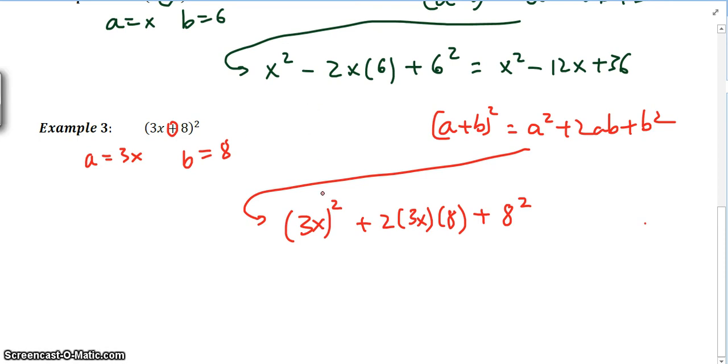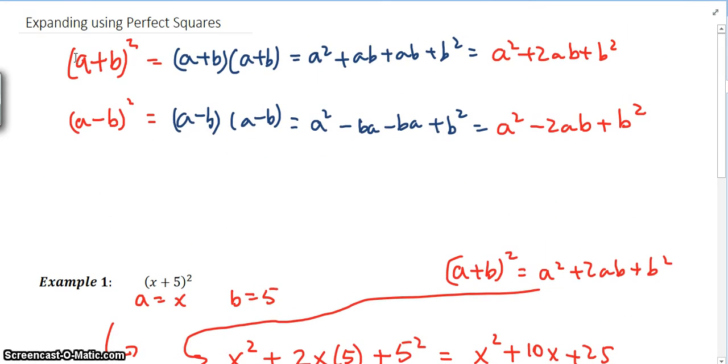If we expand this now, what we end up getting is 9x squared plus 2 times 3x is 6x times 8 is 48x plus 64 in this case. You can see here how that's come to just by using the rule a plus b, a minus b.